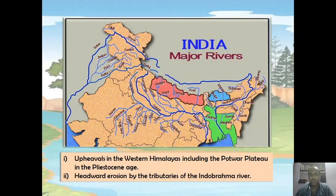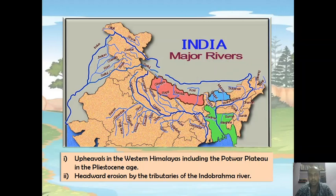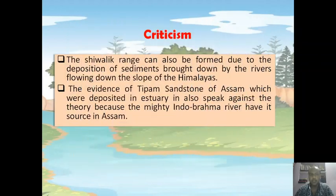Later, this mighty river got subdivided into three major North Indian river systems — the Himalayan river systems: the Indus river system, the Ganga river system, and the Brahmaputra river system. The Indus river system is composed of five tributaries, Ganga has many tributaries, and Brahmaputra has a small number of tributaries. This bifurcation happened due to upheaval in the western Himalayas including the Potwar plateau in the Pleistocene age, and also due to headward erosion by the tributaries of the Indo-Brahma river.